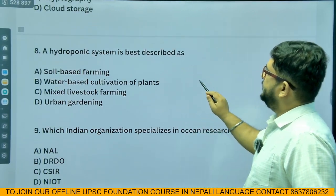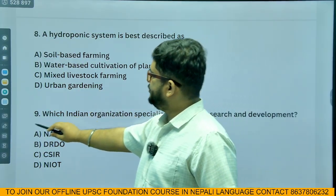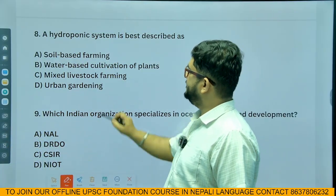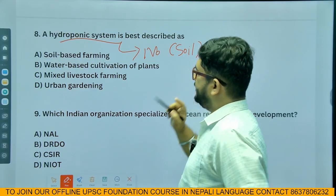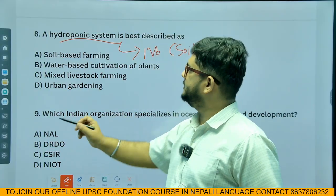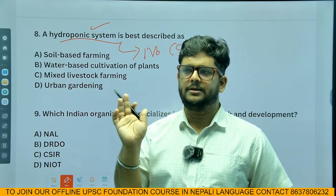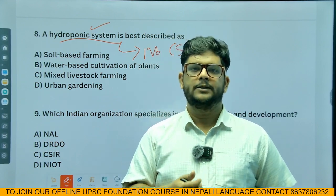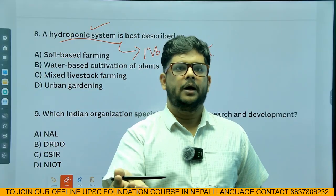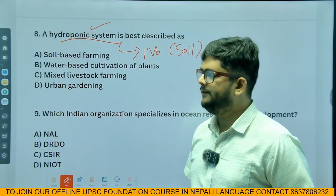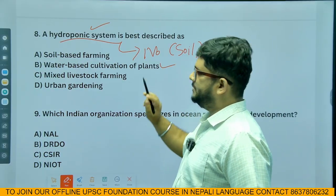Hydroponics system: is it soil-based farming, water-based cultivation of plants, mixed livestock farming, or urban gardening? Hydroponics means there is no presence of soil. So the correct answer is water-based cultivation of plants. This is an advanced agricultural technology used in advanced economies like Israel.